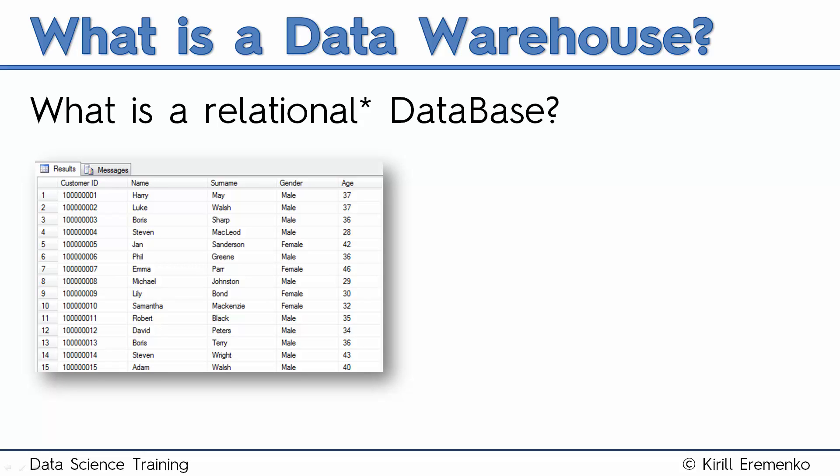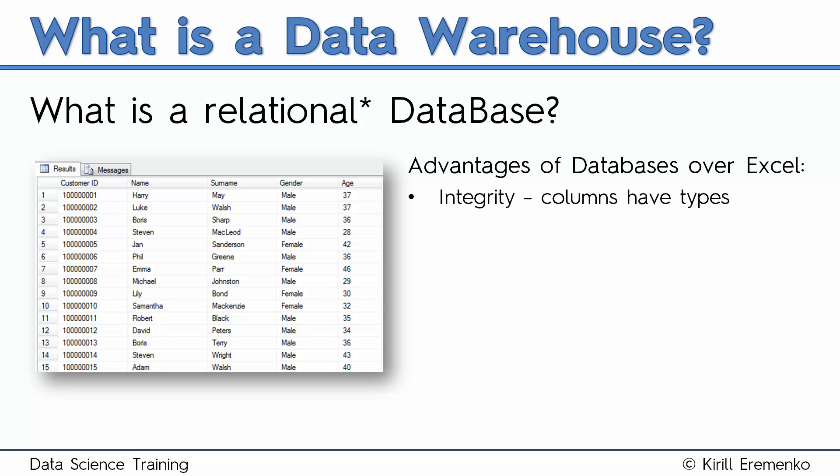However, a database has numerous advantages over Excel. Number one: integrity. While in Excel every cell is separate and you can place anything you want into it — for example, a date, a number, a text, and so on — in a database, columns have predefined types. Therefore, if your column is designed to contain numbers, it cannot contain text, or a date, or any other type of information, and vice versa.